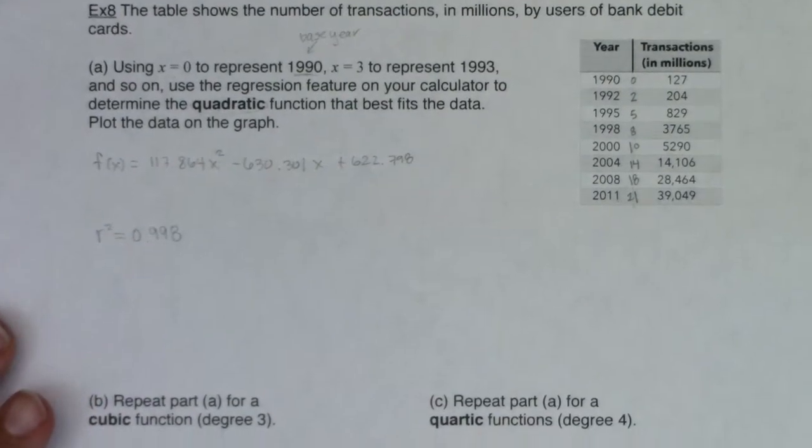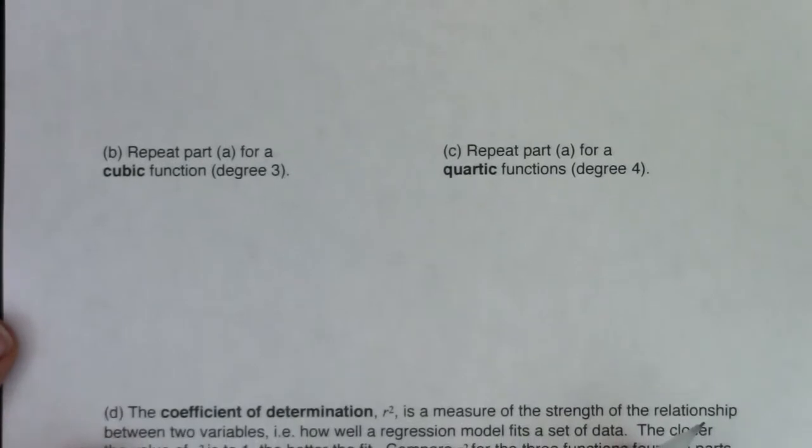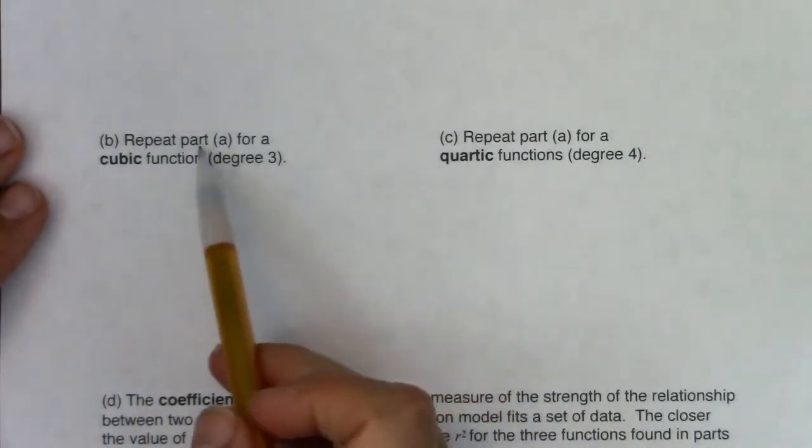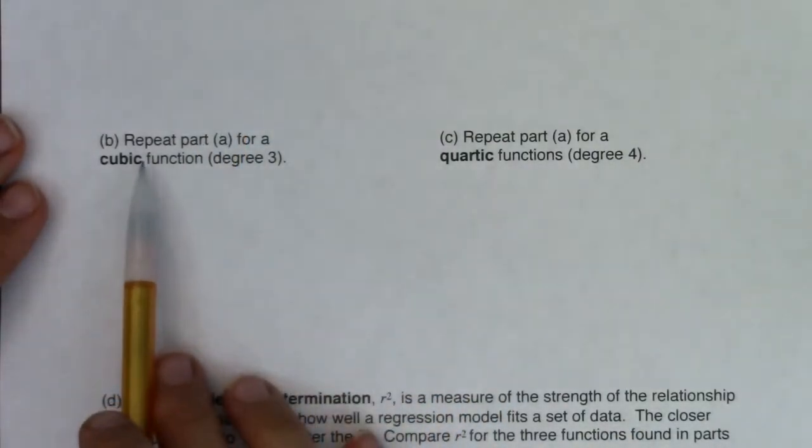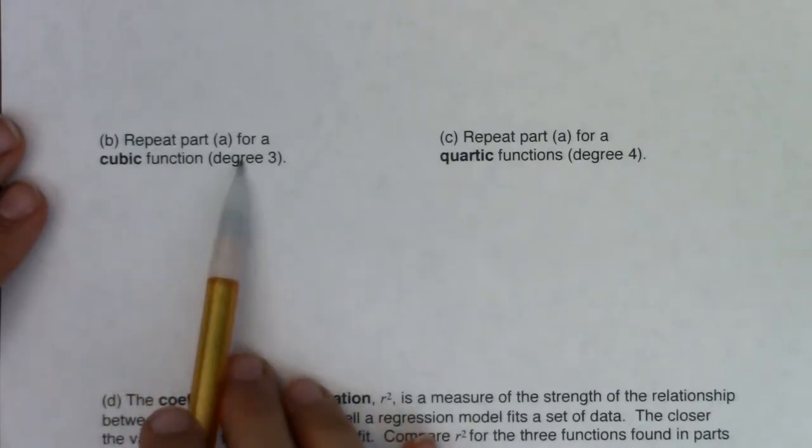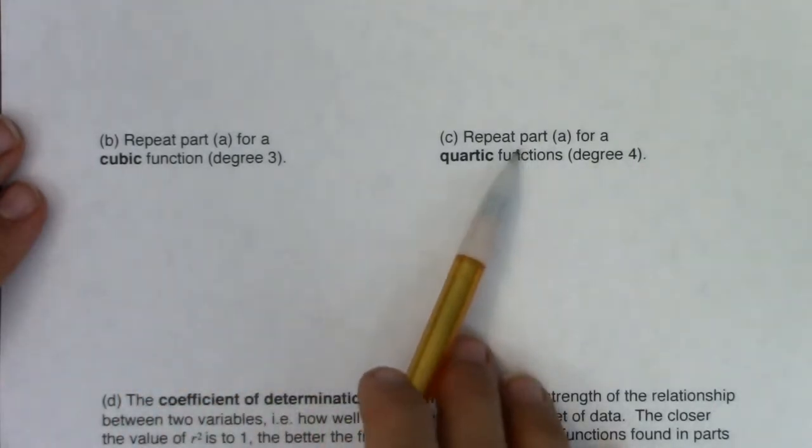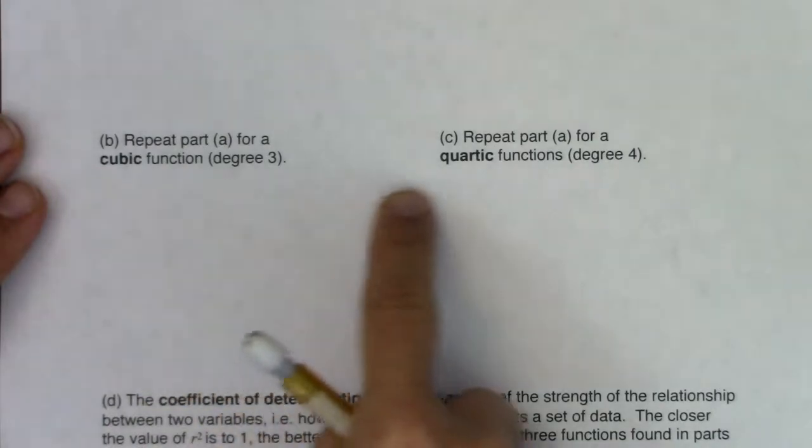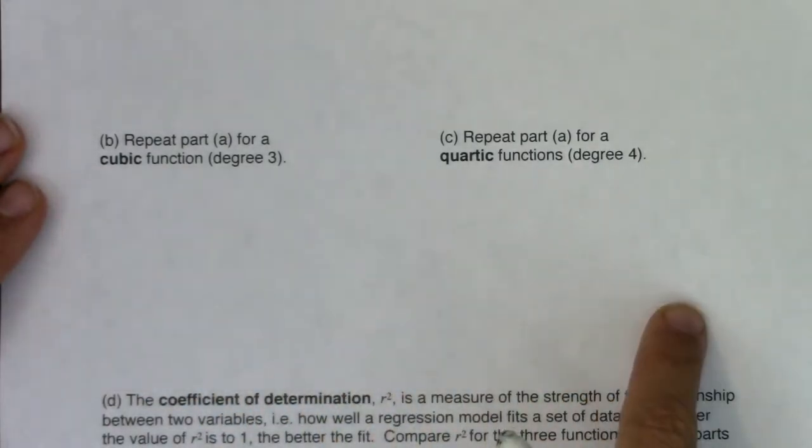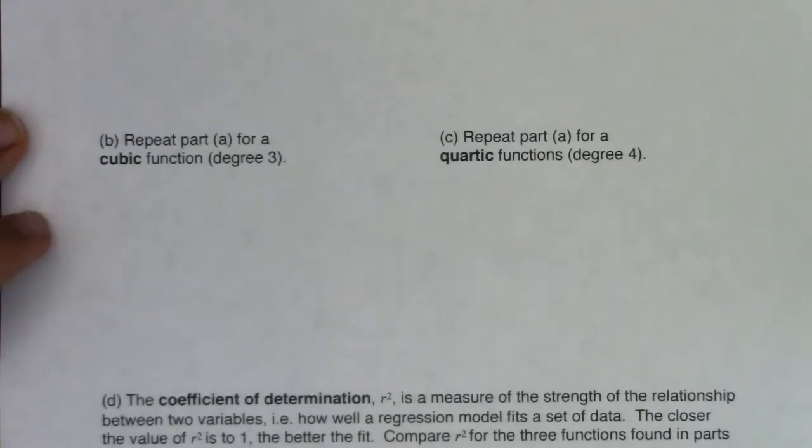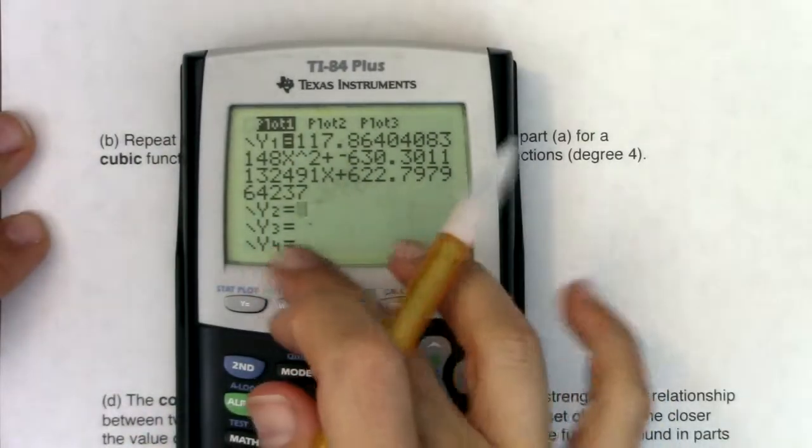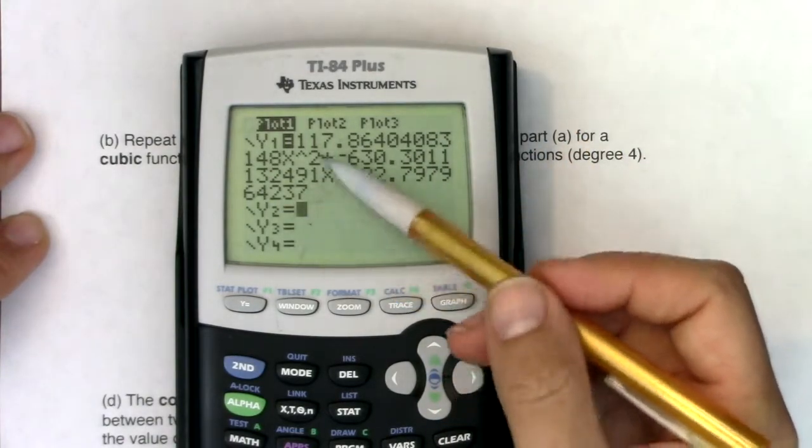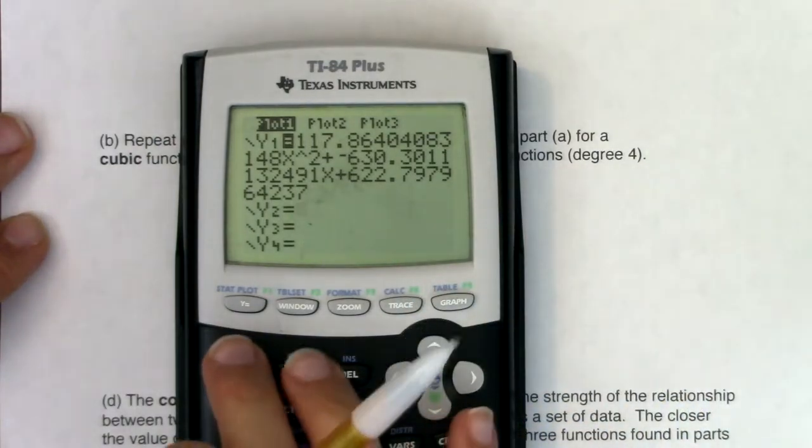I'm going to scooch this up so we can get the next examples in view. I want to repeat the same process I did in A, but now I want to do a cubic function, a degree 3 polynomial. And then I want to try a quartic function, a degree 4 polynomial. I'm going to write the cubic one on this part of the paper and the quartic one down here, and I'm still going to keep track of their R squared numbers.